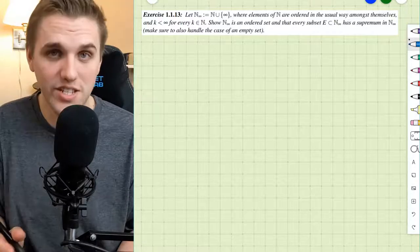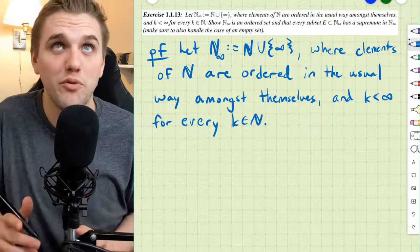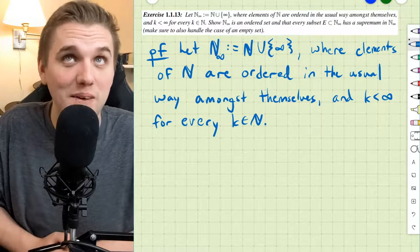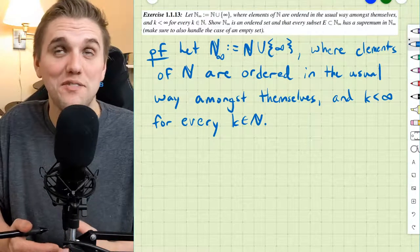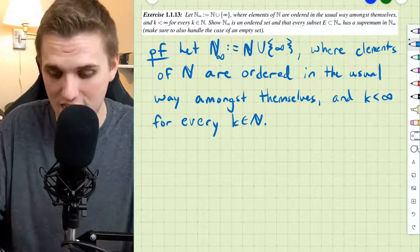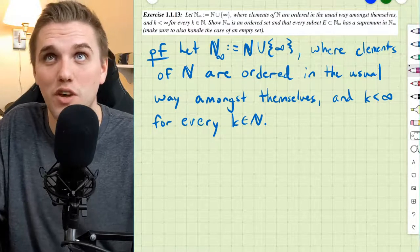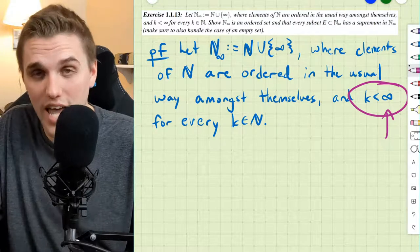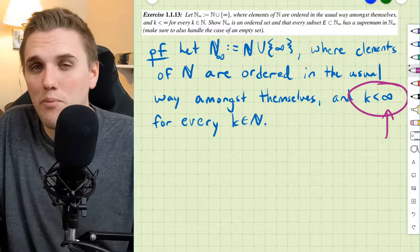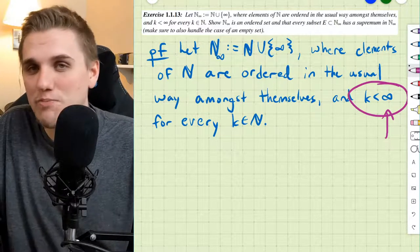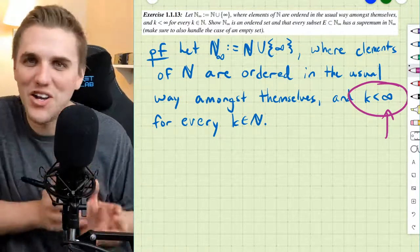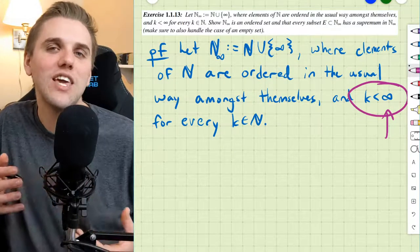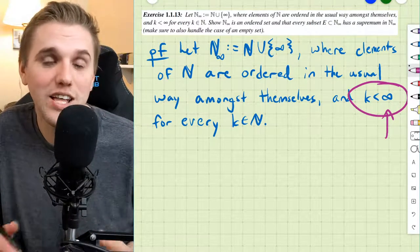We're going to do a direct proof. Let this special set N-infinity equal the natural numbers union the element infinity, where elements of N are ordered in the usual way amongst themselves, and K is less than infinity for every K that's a natural number. I really want to stress something: this is what we're defining infinity to be. Infinity here is a label for a special element in this set — don't confuse it with countable infinity, uncountable infinity, or any of those other infinities.